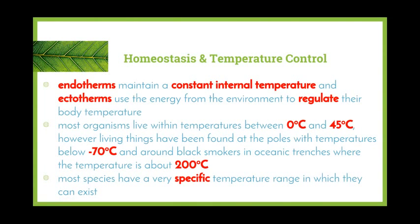What does this have to do with homeostasis? Endotherms are organisms that maintain a constant internal environment, while ectotherms use energy from the environment to regulate their body temperature. One way to remember this is: endo means inside, so their internal temperature stays the same; ecto means outside, so they get their energy from the environment.